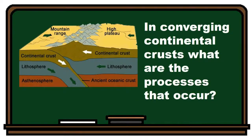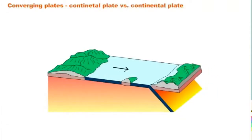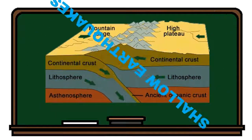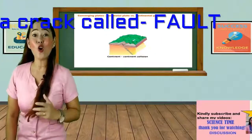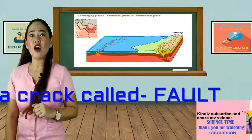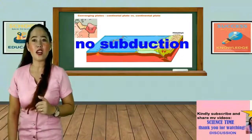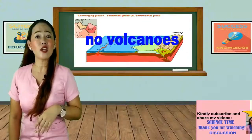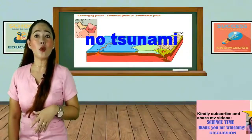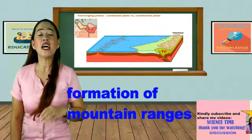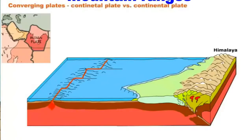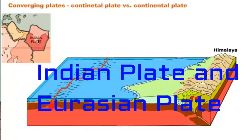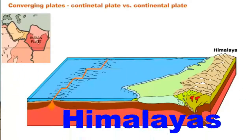In converging continental crusts, what processes occur? Converging continental plates result in a collision zone which could cause shallow earthquakes. At that place, a crack called a fault is formed. This type of convergence will cause no subduction — because the two plates have the same densities — no volcanoes, and no tsunamis. The convergence will result in a group of high landforms called mountain ranges. One example is the collision of the Indian plate and the Eurasian plate, creating the Himalayan mountains.